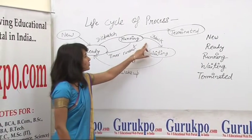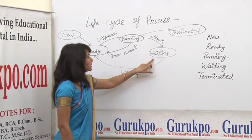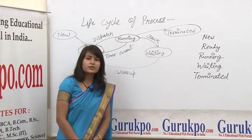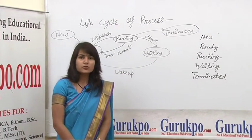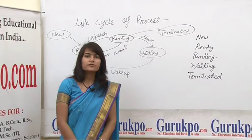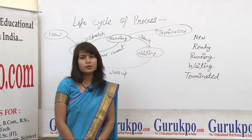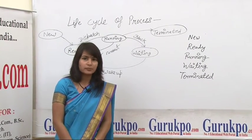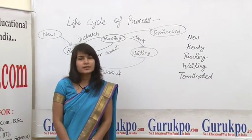In the fourth state, called the waiting state, the process goes into this state when it is waiting for some input/output or some event to occur.